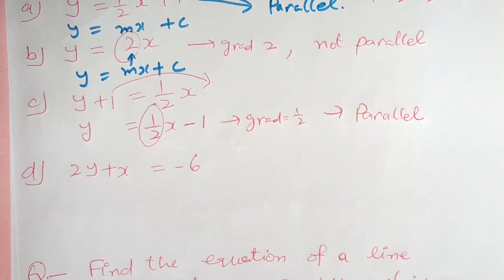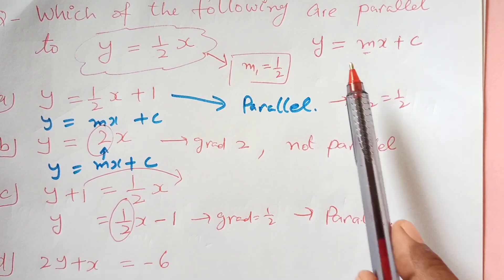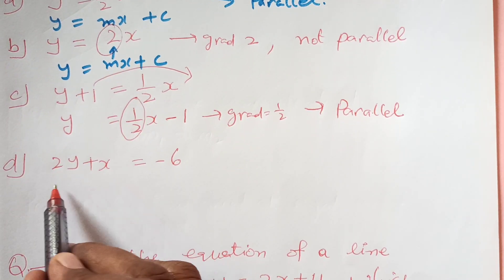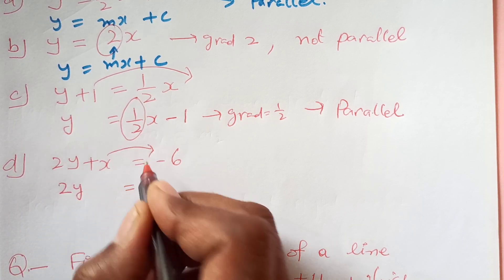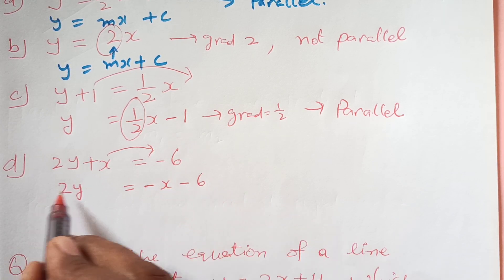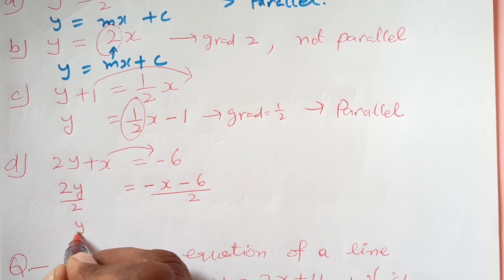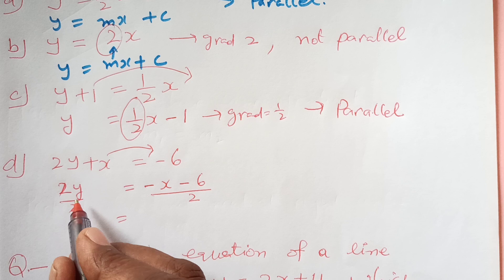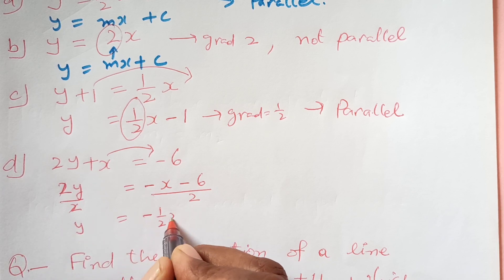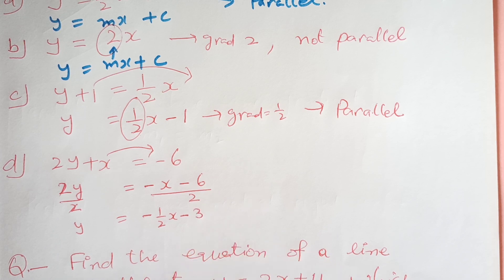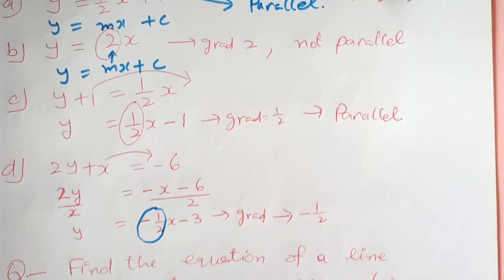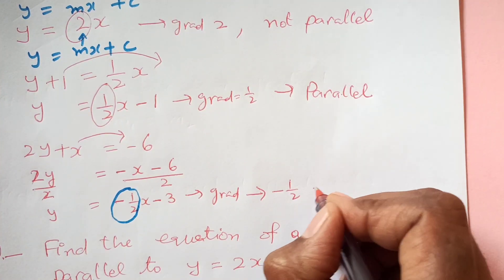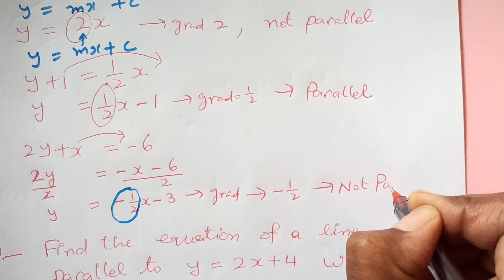I hope you understood what we are doing here. You need to make every equation in y equals Mx plus C form. Here we do not have it in that form, so we need to make y the subject. 2y equals negative x minus 6. Divide by 2: y equals negative half x minus 3. So the gradient here is negative half, but the gradient of the given line was positive half. That means this line is again not parallel.